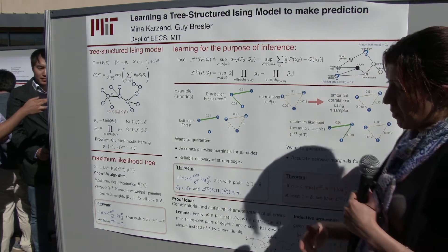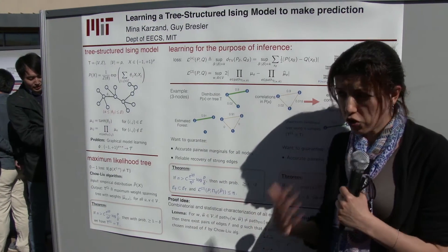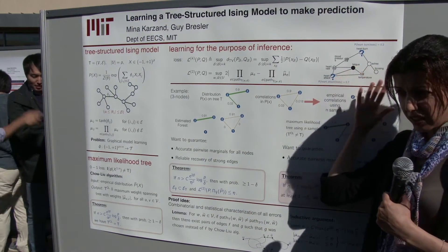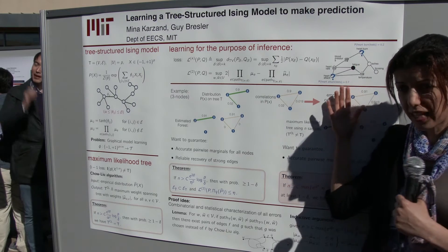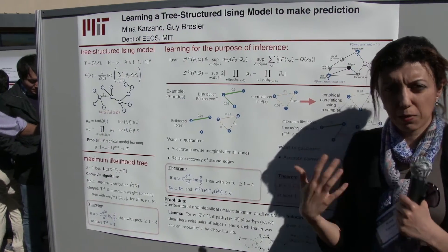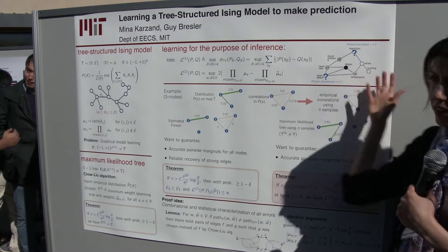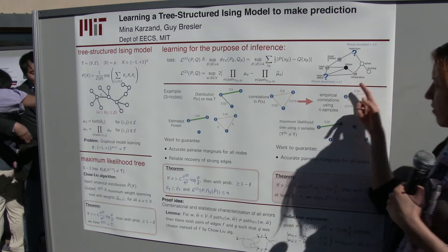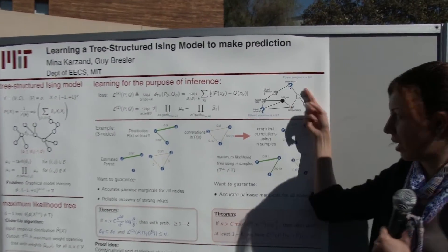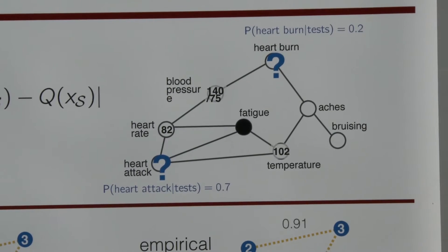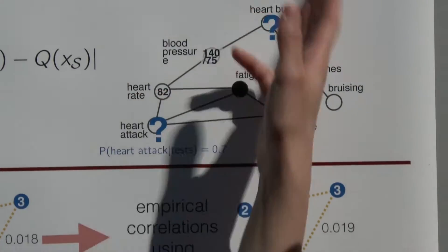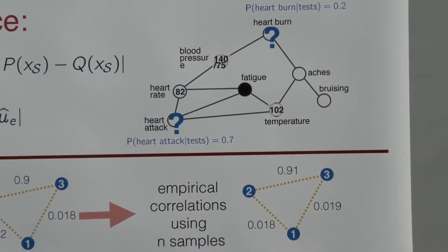But we don't do structure learning always just to recover the correct tree. Sometimes what we want to do is have an estimation of the distribution, so that we can do inference later on the recovered distribution that we get. For example, if you have several random variables, and we're observing a few of them and we want to predict something about the other one, we don't care if the underlying graph is the correct graph or not. What we want is to make sure that the marginal distribution over these subset of nodes is accurate enough.